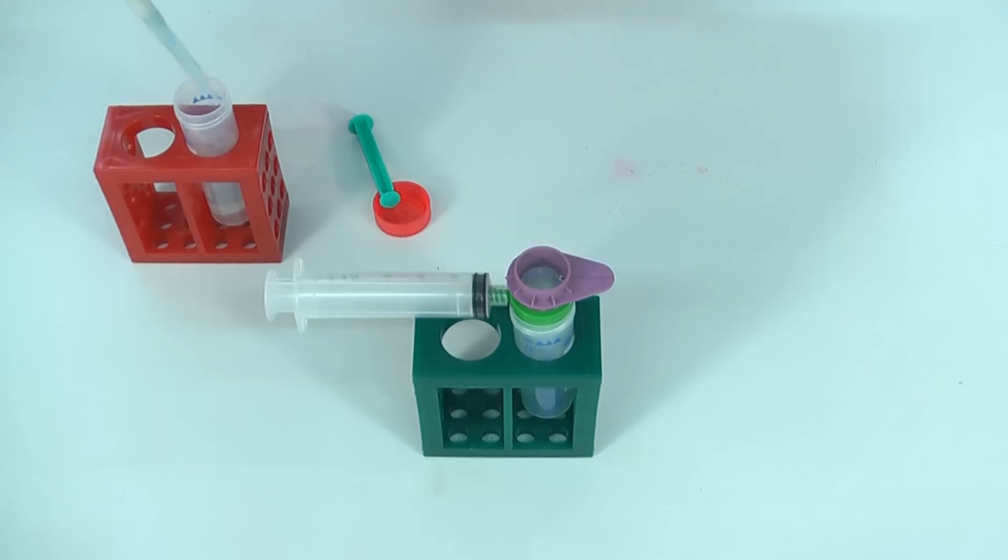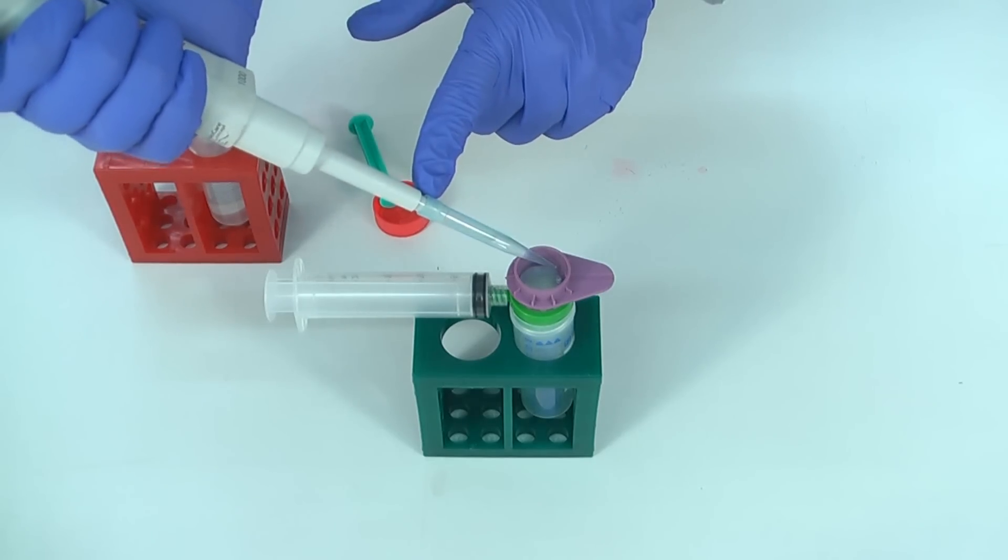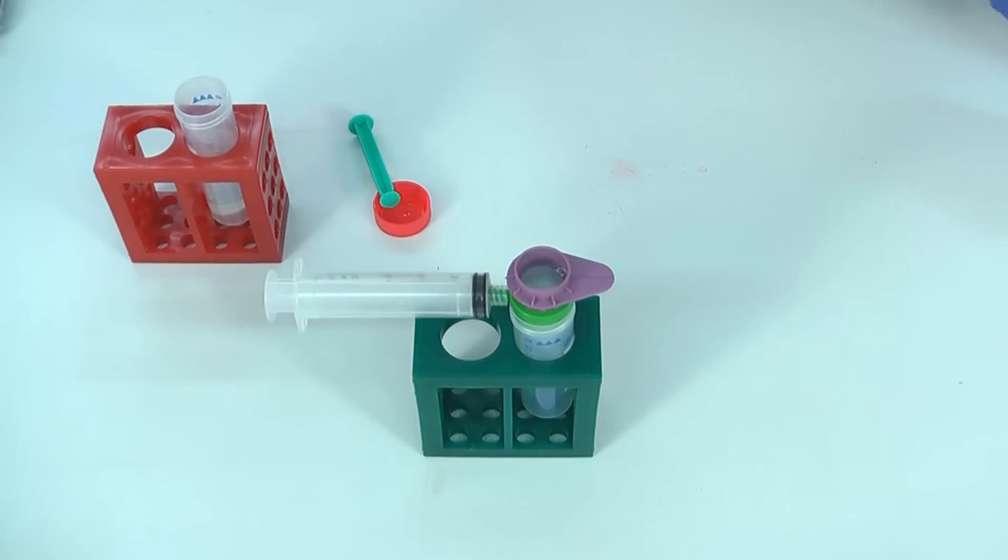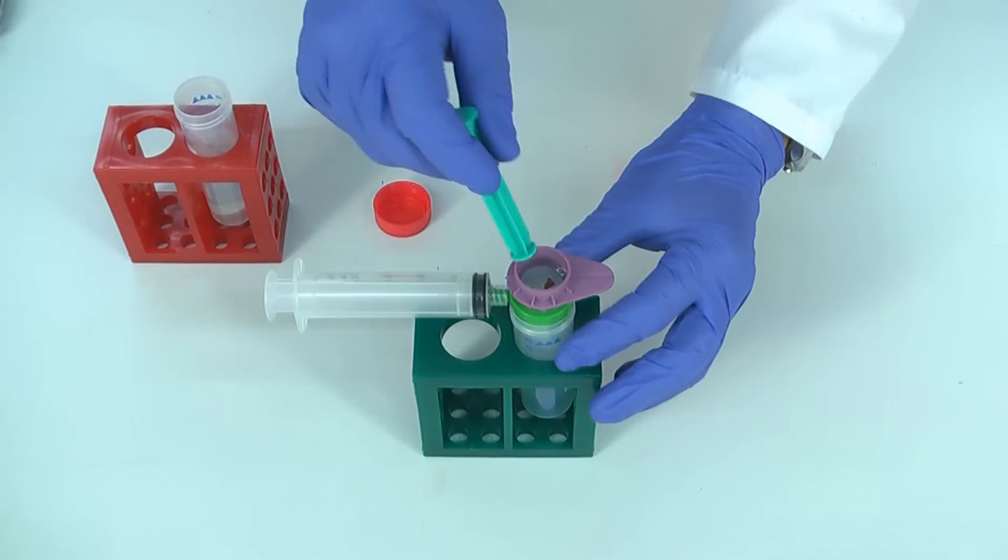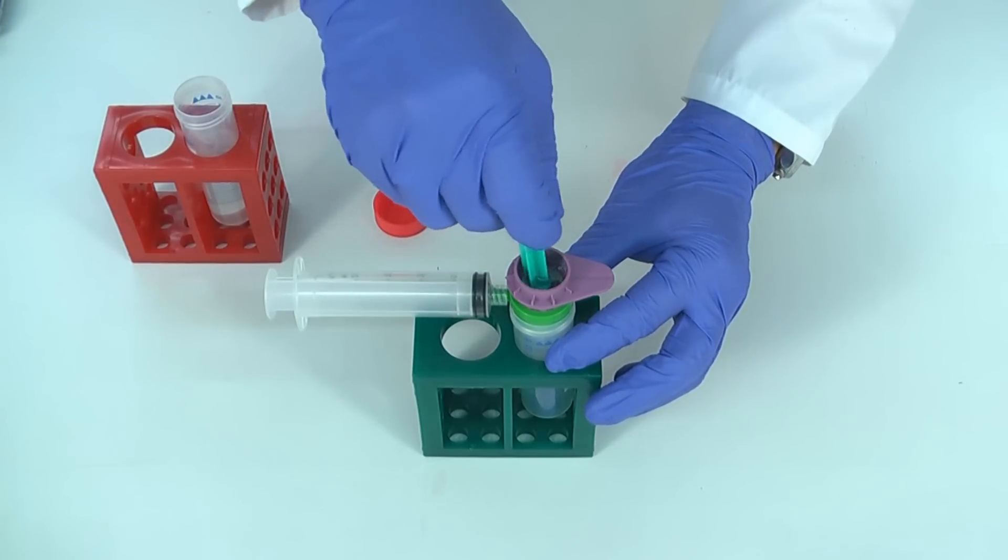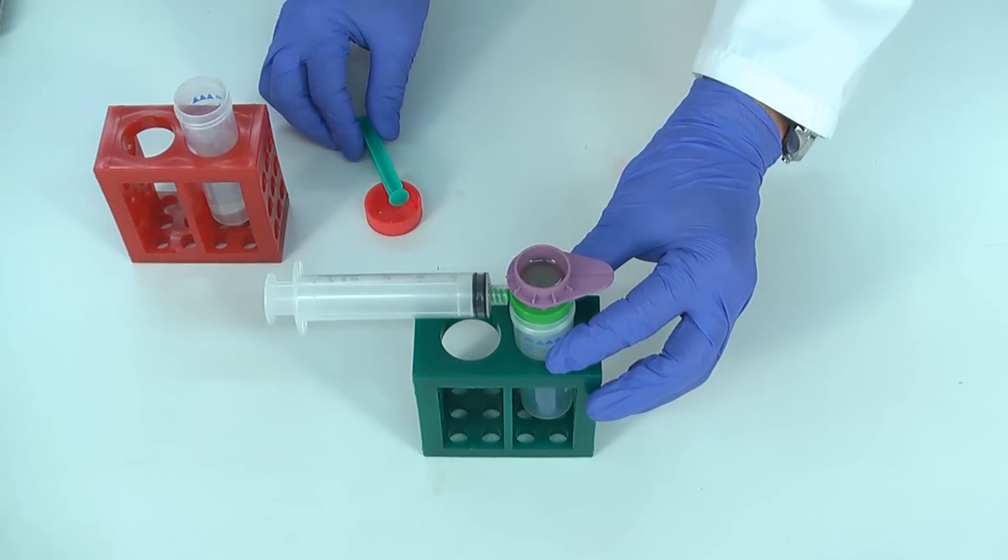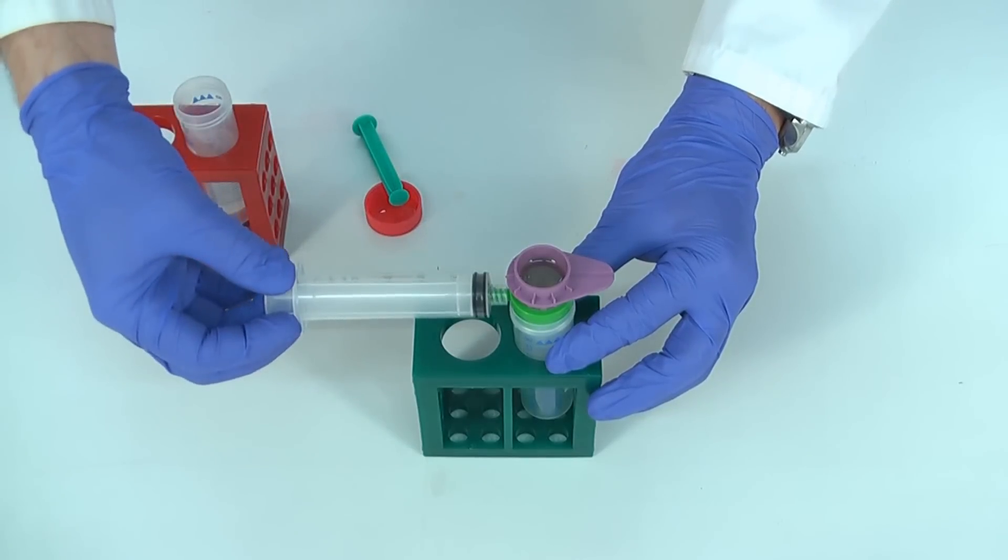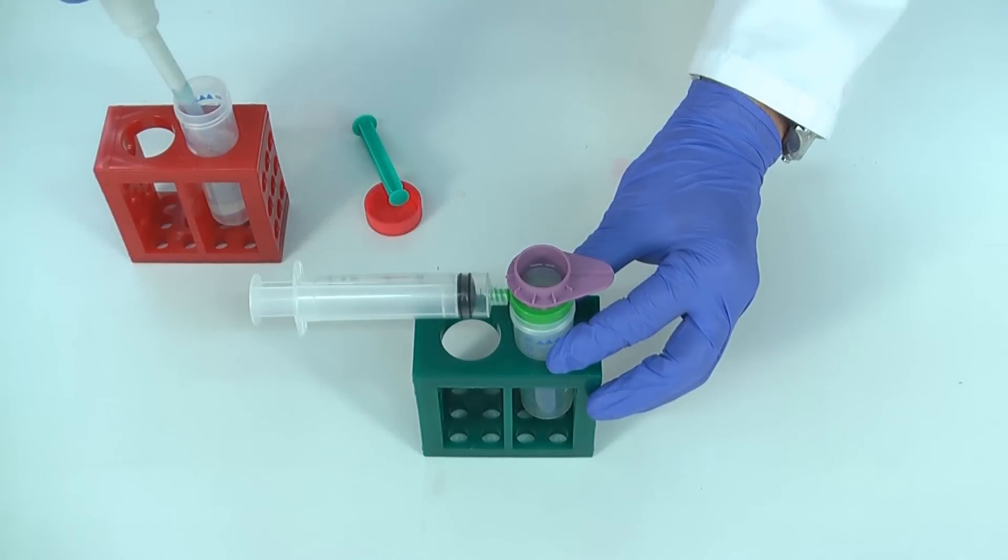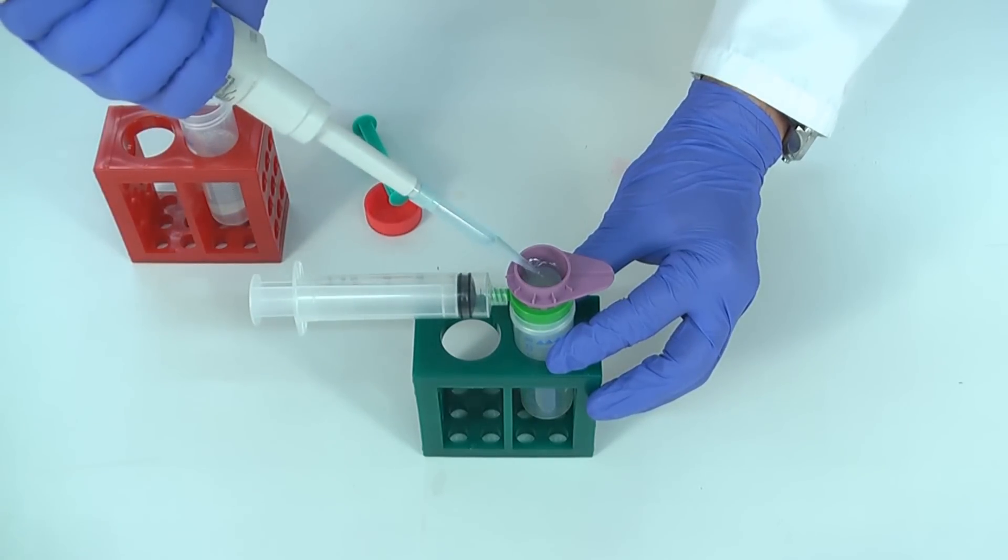In this example, we show you how to disrupt mouse spleen with the help of our pluriStrainer to prepare a single cell solution. First combine connector ring, tube, pluriStrainer and syringe. Add buffer and some of your mouse spleen. You can use, for example, a syringe piston to pound the spleen on the strainer. Pull the syringe piston a little bit. Repeat the steps as shown in the video.